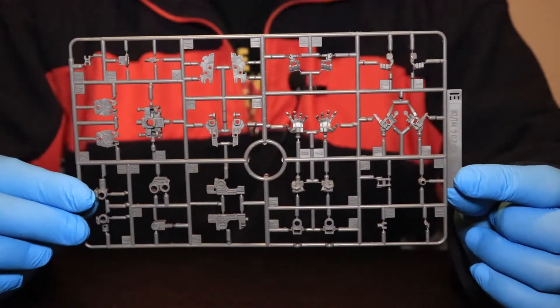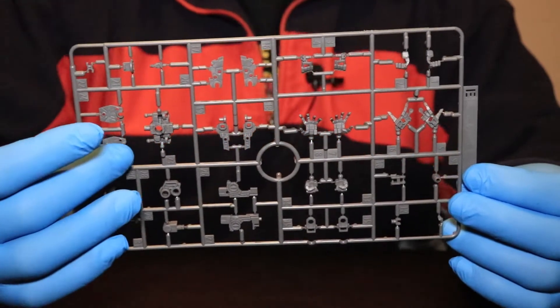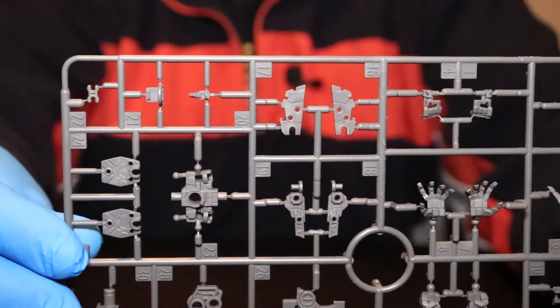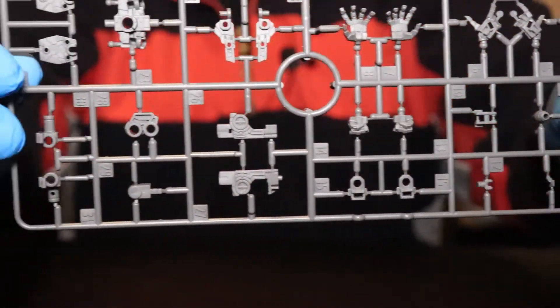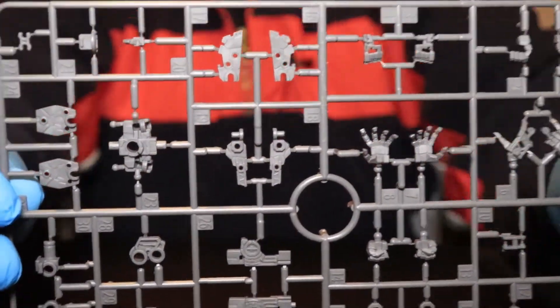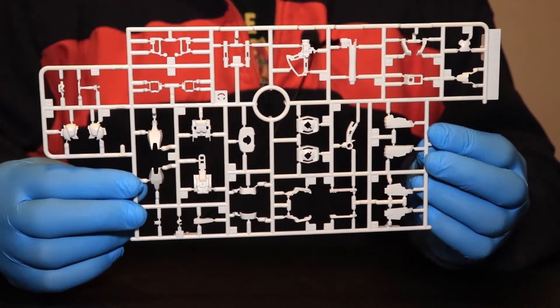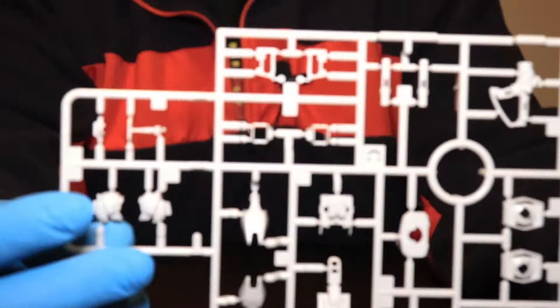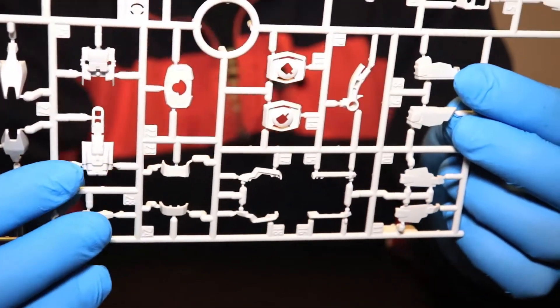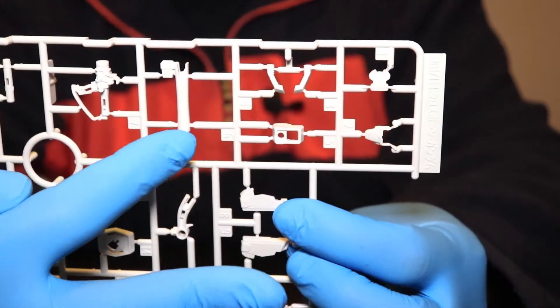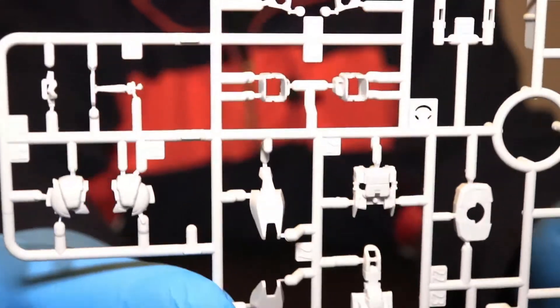We have the E plate right here. See some of the hands, more of the frame. C plate right here. Got some parts for the head and here's the gun, the rifle.